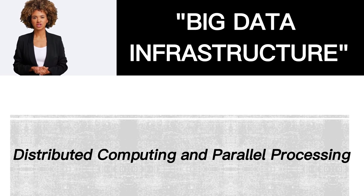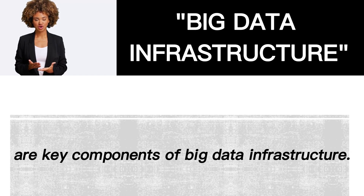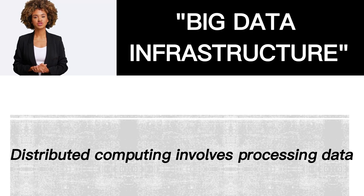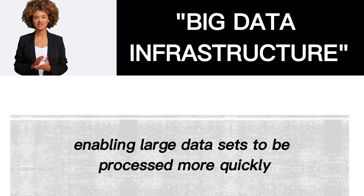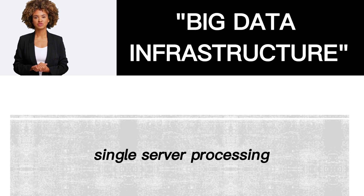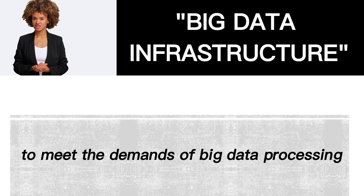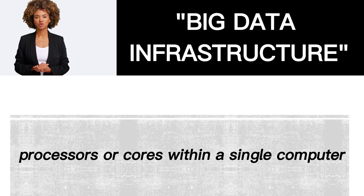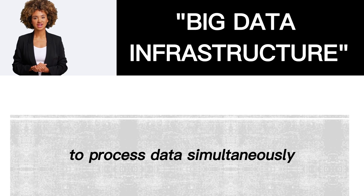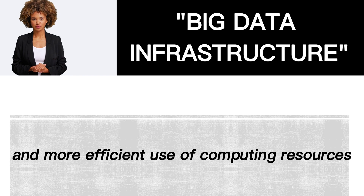Distributed Computing and Parallel Processing are key components of big data infrastructure. Distributed computing involves processing data across multiple computers and servers in a network, enabling large data sets to be processed more quickly and efficiently than traditional single-server processing. Parallel processing refers to the use of multiple processors or cores within a single computer to process data simultaneously, allowing for faster processing times and more efficient use of computing resources.